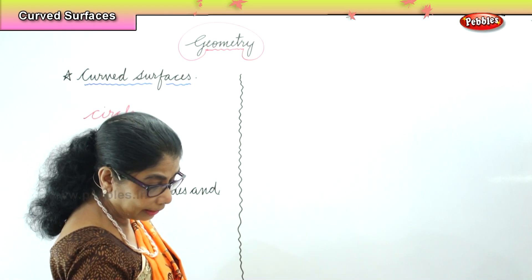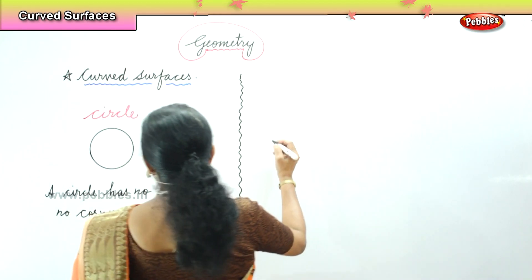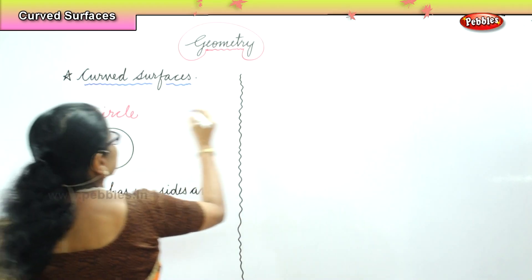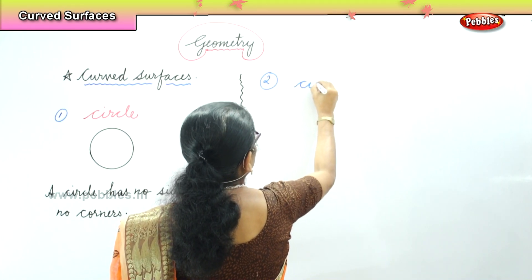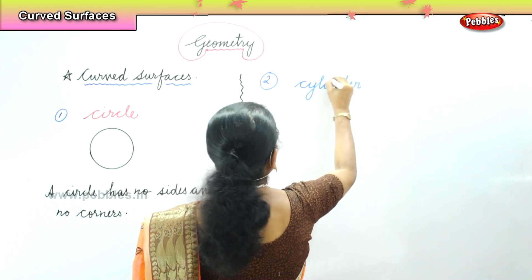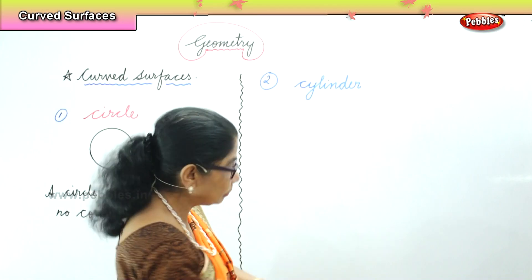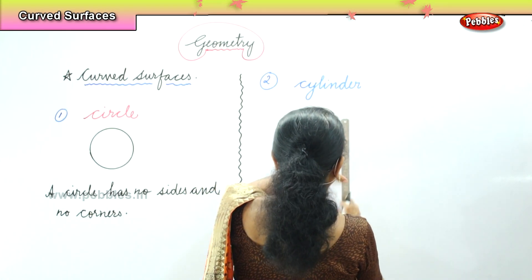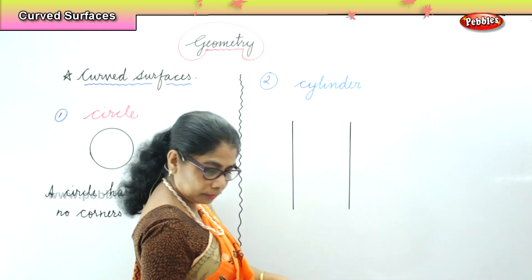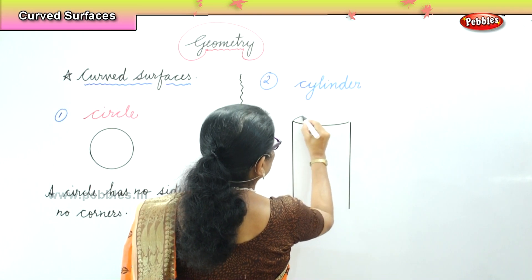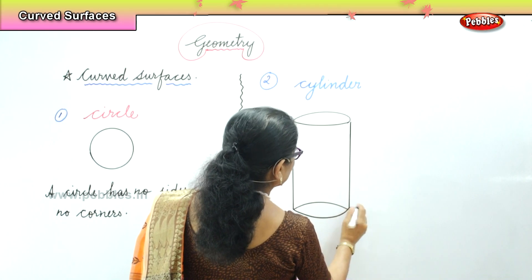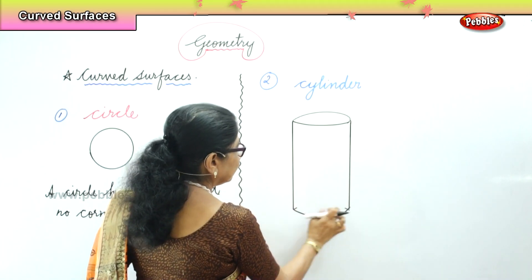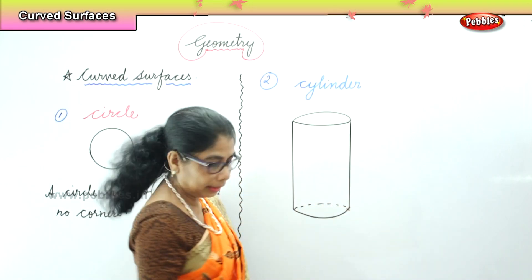Now, let us look at a cylinder. We are going to look at a cylinder. Here we have a cylinder. This is a cylinder.